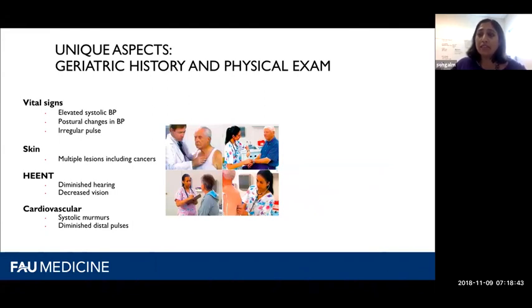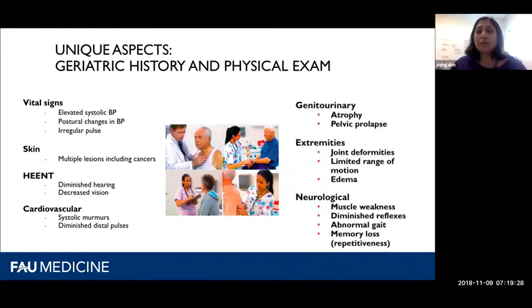For vital signs, as people get older their arteries become more calcific, so they may have elevated systolic blood pressure or postural changes — drops in blood pressure going from sitting to standing. They may have an irregular pulse; atrial fibrillation is more common with age. They may have multiple skin lesions including skin cancers — squamous cell and basal cell carcinomas are very prevalent. Diminished hearing and vision, systolic murmurs, aortic stenosis, diminished distal pulses due to peripheral arterial disease, vaginal atrophy, benign prostatic hypertrophy, joint deformities, limited range of motion, lower extremity edema, muscle weakness, diminished reflexes, abnormal gait, and memory loss.